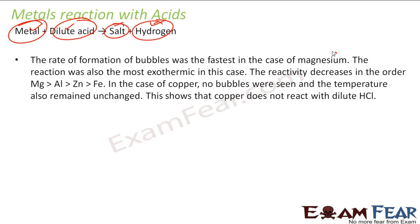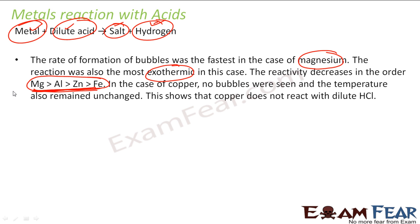The rate of formation of bubbles in the case of magnesium was the fastest, and the reaction is the most exothermic in this case. We took a dilute HCl and the reactivity decreases in a certain order. When we reacted magnesium, aluminium, zinc, and iron with acid, we found the reactivity series.